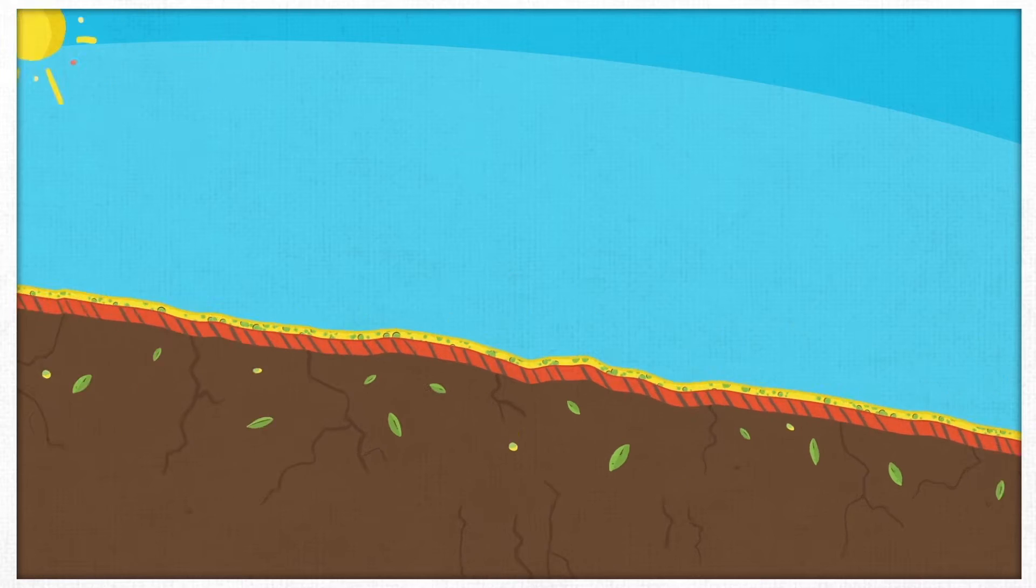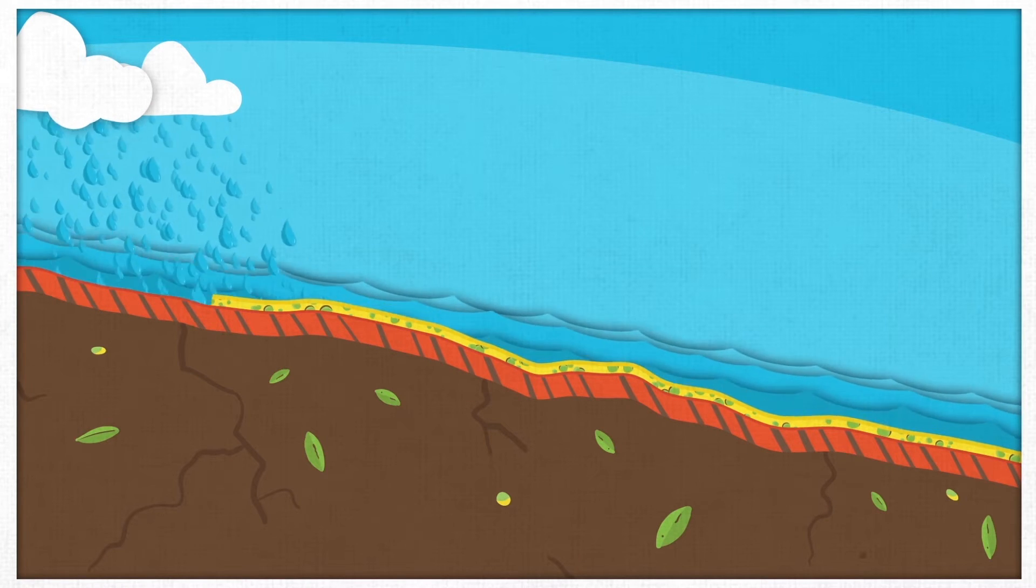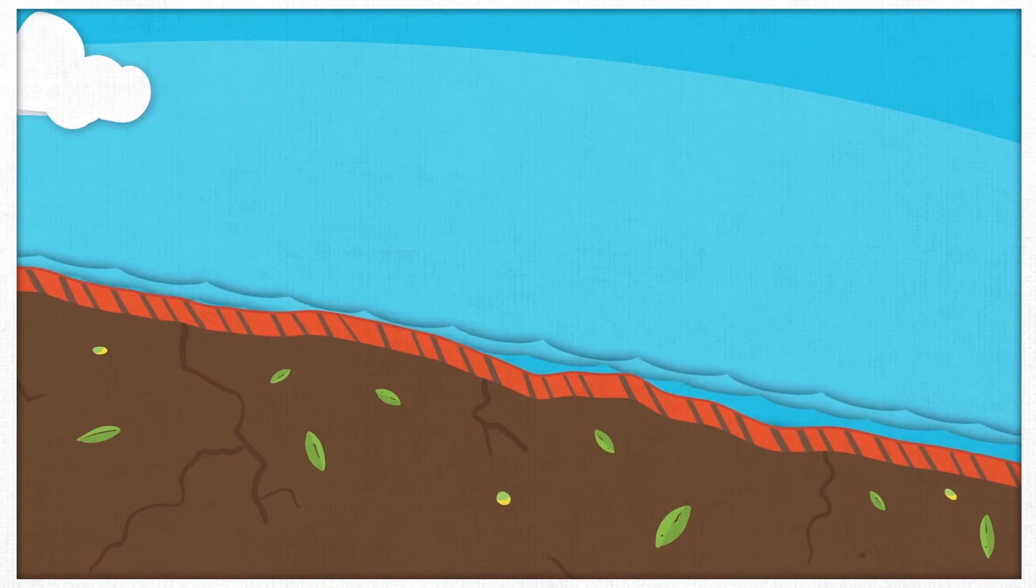It's a common misconception to think there's no rainfall in dry areas. It doesn't rain often, but when it does, the rain is so intense that it flushes away the fertile soil and causes downstream flooding.